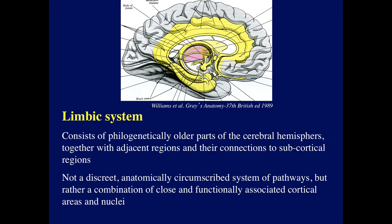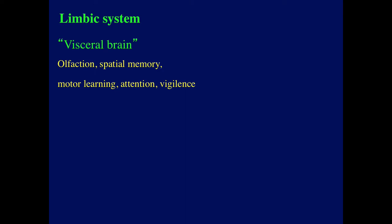What is the limbic system in its latest version? It consists of a phylogenetically older part of the cerebral hemisphere, together with adjacent regions and their connections to the subcortical regions. It's not a discrete anatomically circumscribed system of pathways, but rather a combination of closely and functionally associated cortical areas and nuclei. Although there are all kinds of theories about its function — including emotion, which turned out not to be the case — it's now considered the visceral brain, involved in olfaction, spatial memory, motor learning, attention, and vigilance.